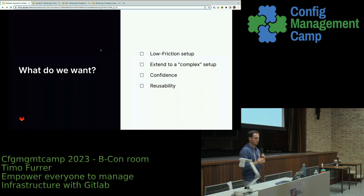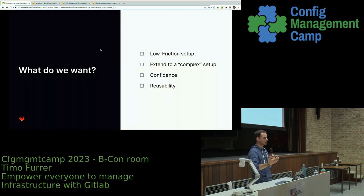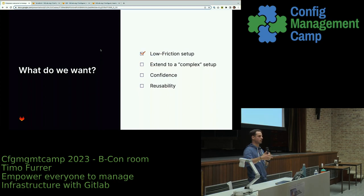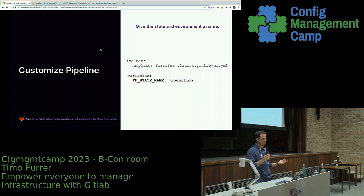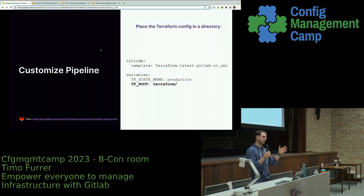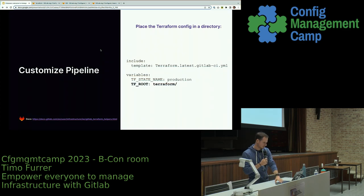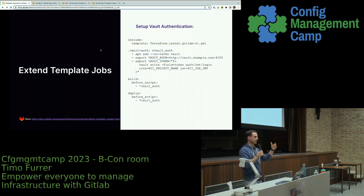With that we have a low-friction setup: we can easily set up a project and already have a state and deploy something using CI/CD. Now let's extend it to something more complex. We can customize the pipeline: the state name is called default by default, but we can set it to something meaningful like production using the TF_STATE_NAME variable. Usually Terraform files aren't in the project root — you can specify the directory using the TF_ROOT variable, and all Terraform files for that module will be found there.